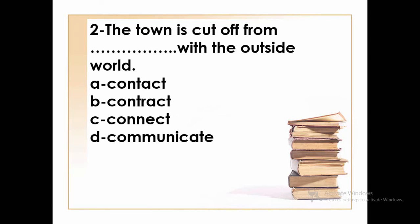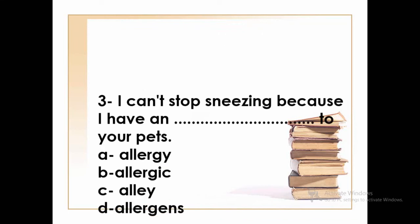Number two: 'The town is cut off from __ with the outside world.' The options are: contact, contract, collect, or communicate. After 'from' it's better to use a noun or gerund. Since there are no gerunds in the options, we need a noun. We have 'contact' and 'contract' as possible nouns. The most suitable one is 'contact'.